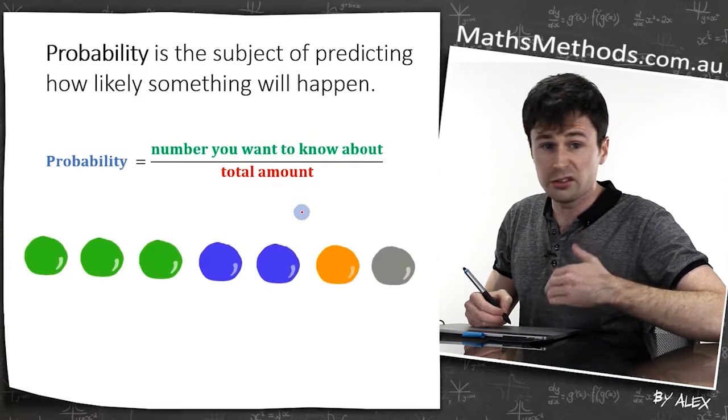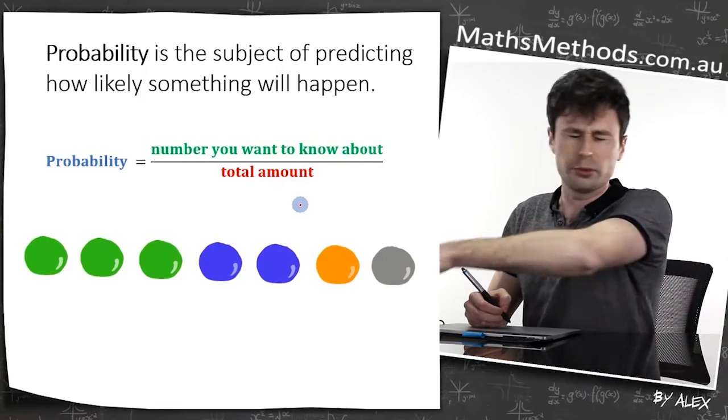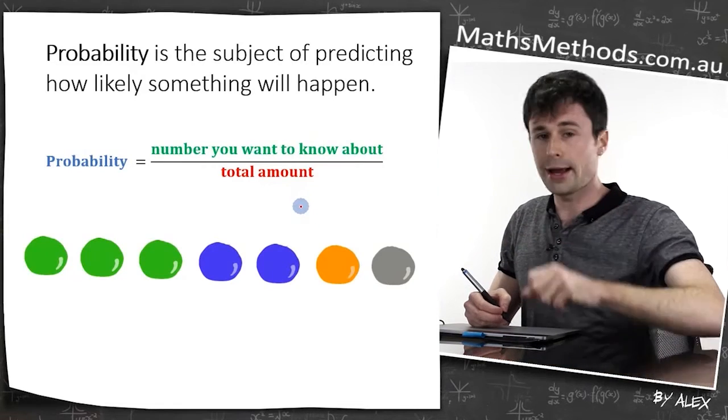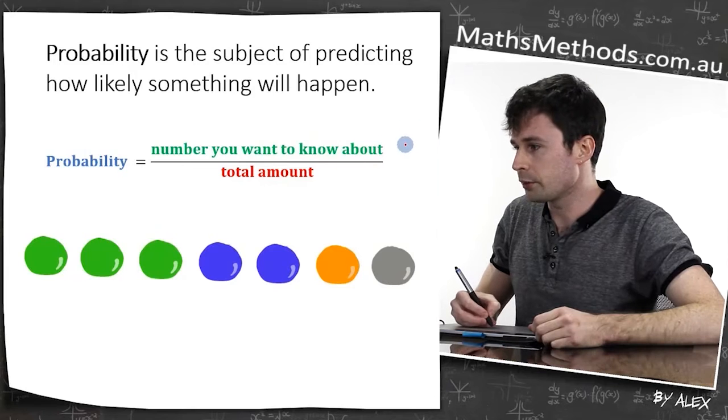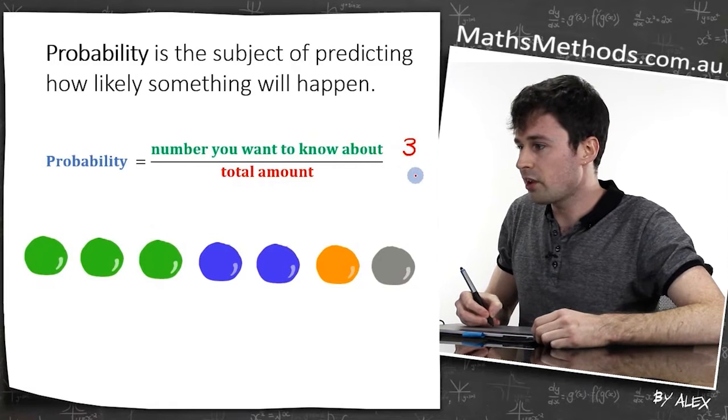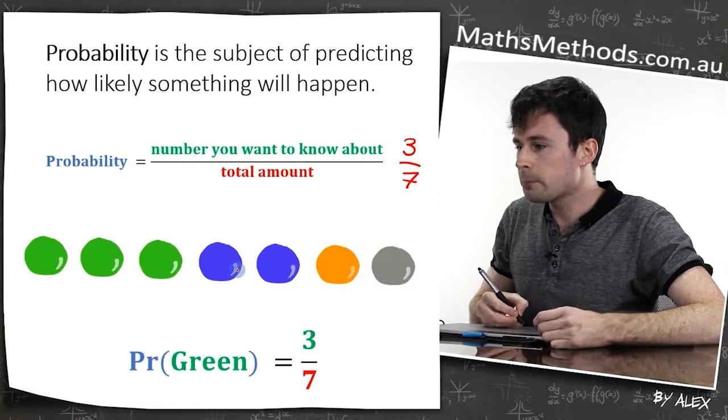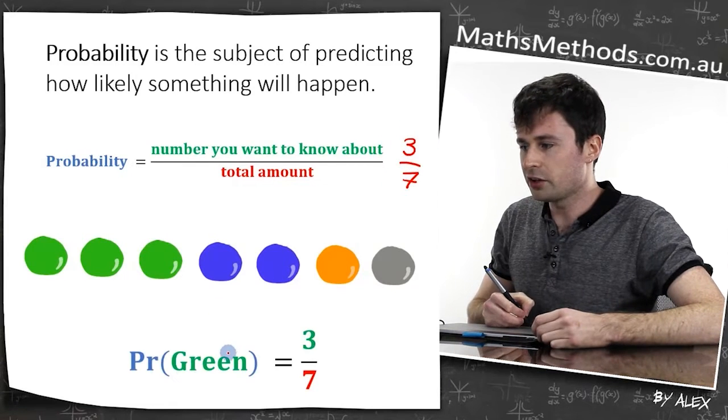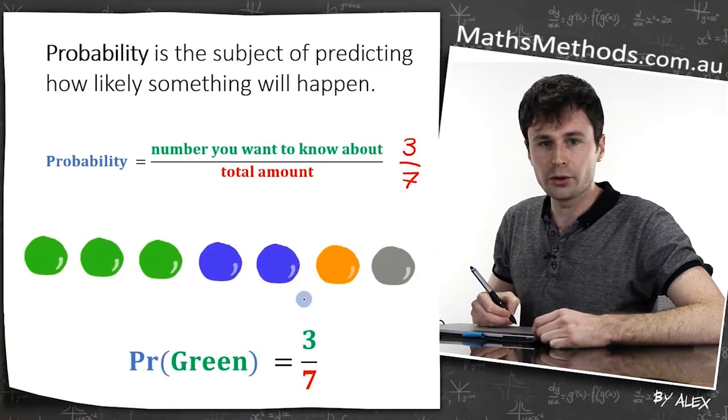We want to figure out the probability of getting a green ball if we just picked one out randomly. There are three green balls and seven balls altogether, so the probability of getting a green ball is three over seven.